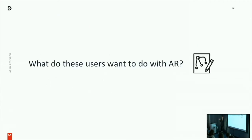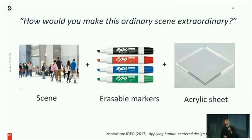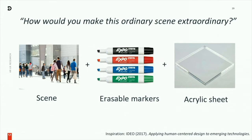In our case, with a general sense of who our users might be, we asked what these users might actually want to make in augmented reality. Inspired by an IDEO article on applying human-centered design for emerging technologies, we had a printout of an ordinary street scene, erasable markers, and an acrylic sheet. We brought in users who generally fit within our different user profiles and asked: how would you make this ordinary scene extraordinary? They drew and narrated what they were thinking.